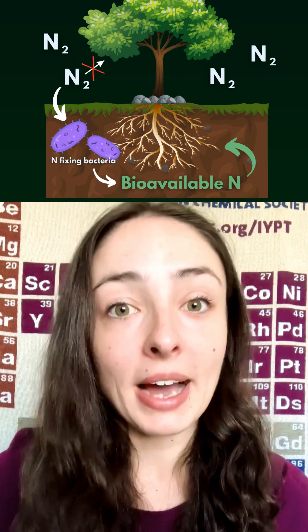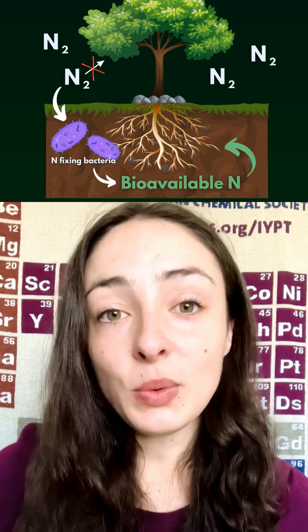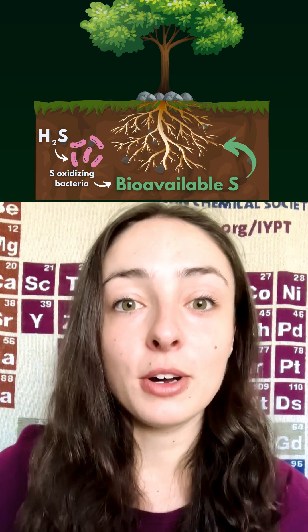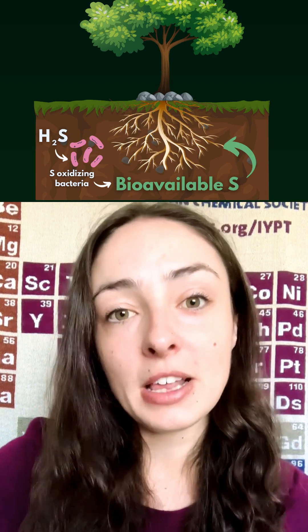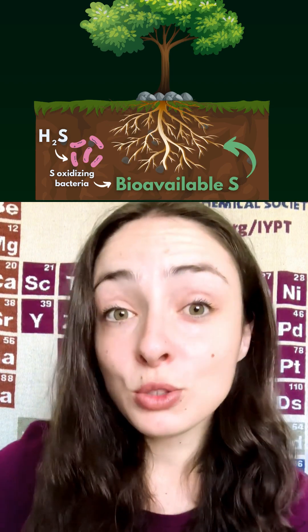Nitrogen, for example, is present in the atmosphere as nitrogen gas, but the only living thing on Earth that can convert that nitrogen gas into a form usable by other life are nitrogen-fixing bacteria. Likewise, sulfur-metabolizing microbes produce sulfur compounds that are available for plant uptake. And most soil microbes produce organic compounds that dissolve phosphorus, making it more available for plant uptake.